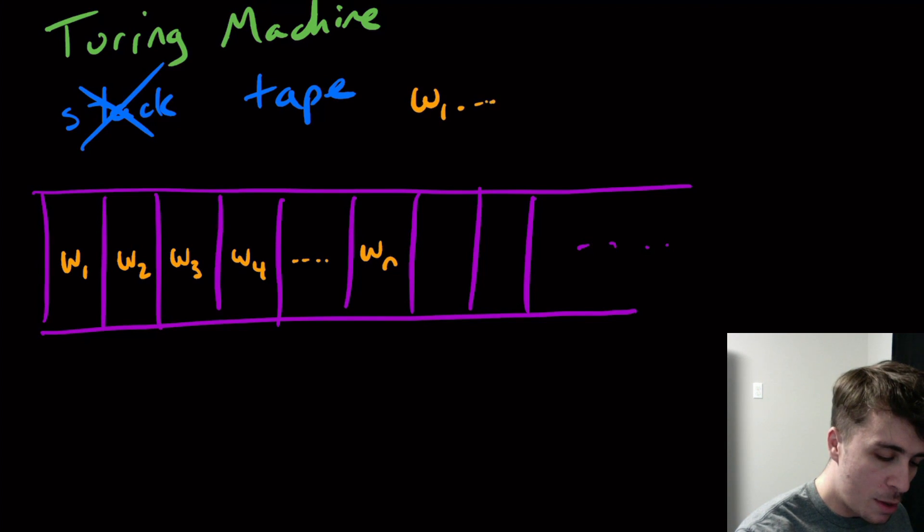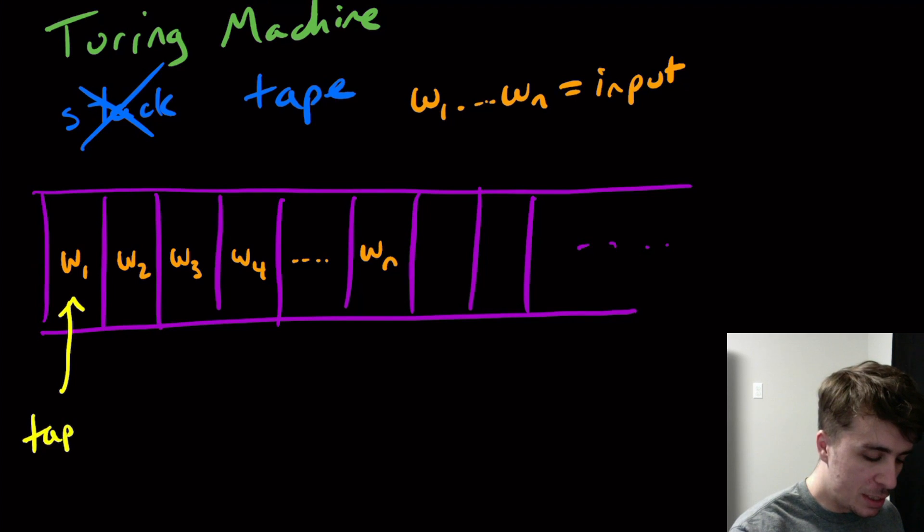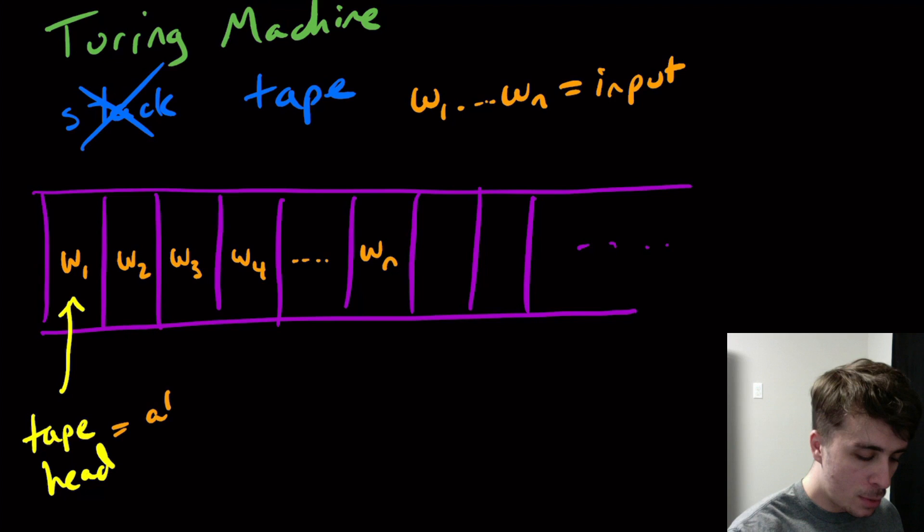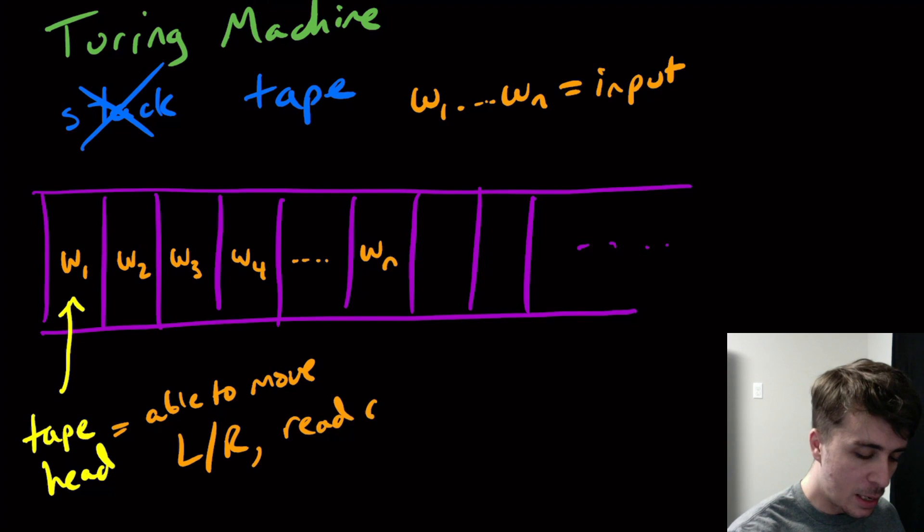In order to investigate what is happening on the tape and what the input is, we have something called a tape head. What it's able to do is move left and right, either backward or forward, one position at a time, as well as read the contents of the cell, and change the contents of a cell.